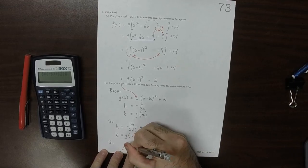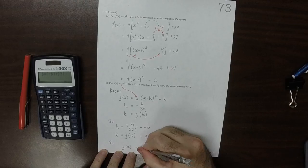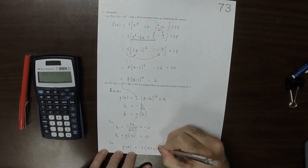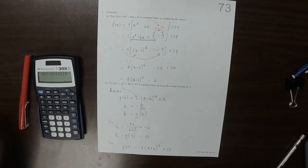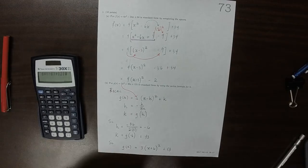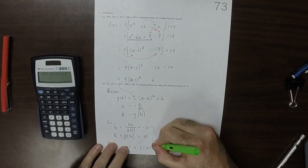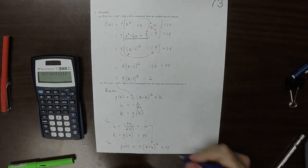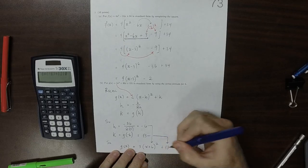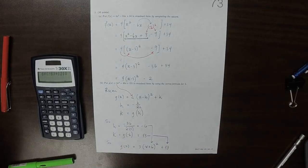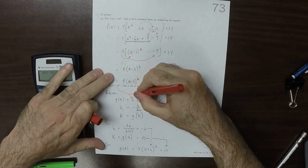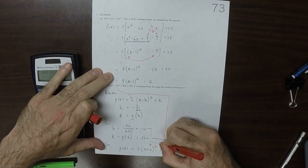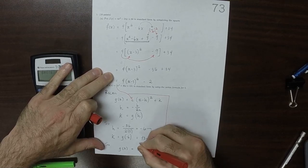g of x is 3, because that's a, and then x plus 6 squared, and then plus 13. Routing these things into position, this 6 is plus 6, because it's x minus negative 6, that one there, and that one there.